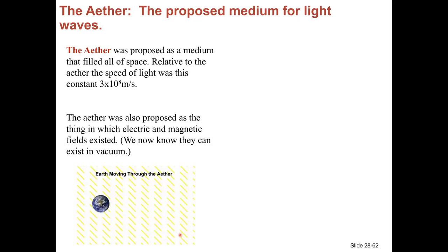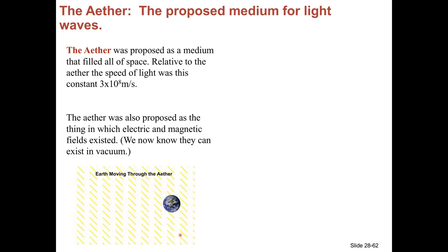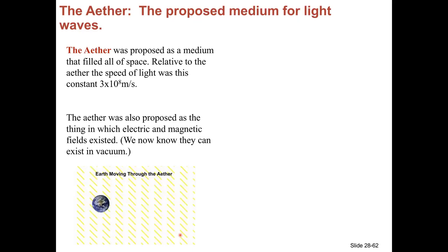This was a very mechanical picture of electric and magnetic fields. It was proposed because it would answer the question: light would move at three times ten to the eighth meters per second relative to the ether. Something moving through the ether — for instance, the Earth — would have to add or subtract its speed through the ether to get the speed of light it would measure. We know now that this is not a correct model; there's no evidence for the ether existing.